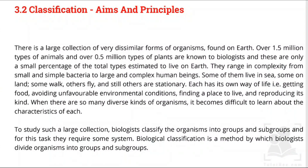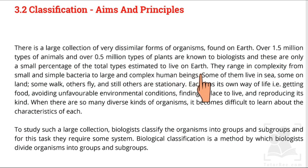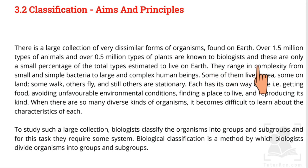We are going to learn about the classification of organisms and its aims and principles. There is a large collection of very dissimilar forms of organisms found on earth. Over 1.5 million types of animals and over 0.5 million types of plants are known to biologists, and these are only a small percentage of the total types estimated to live on earth. They range in complexity from small and simple bacteria to the large and complex human being.